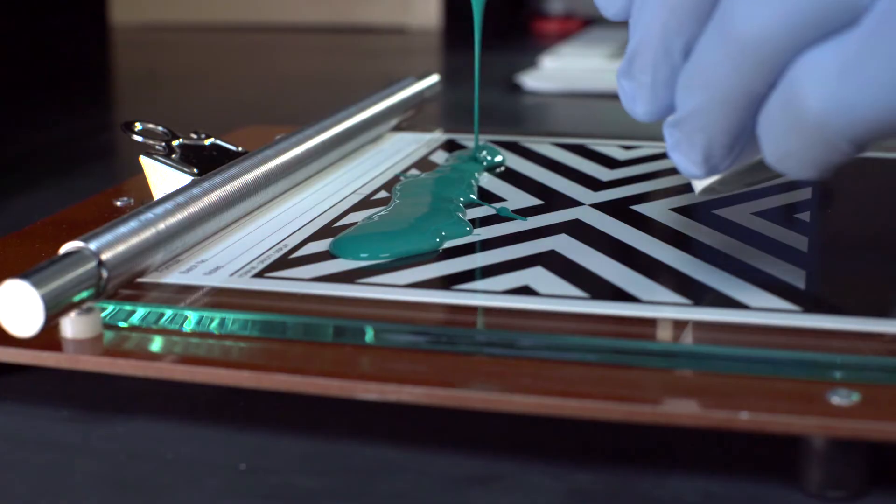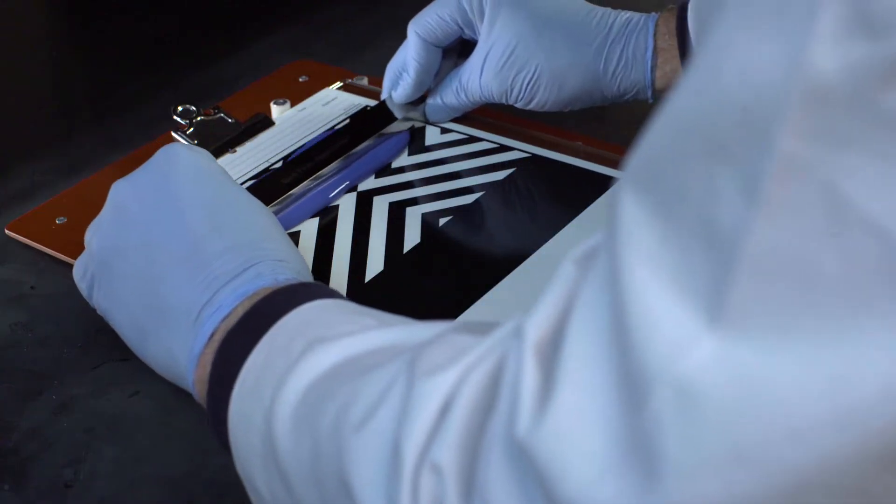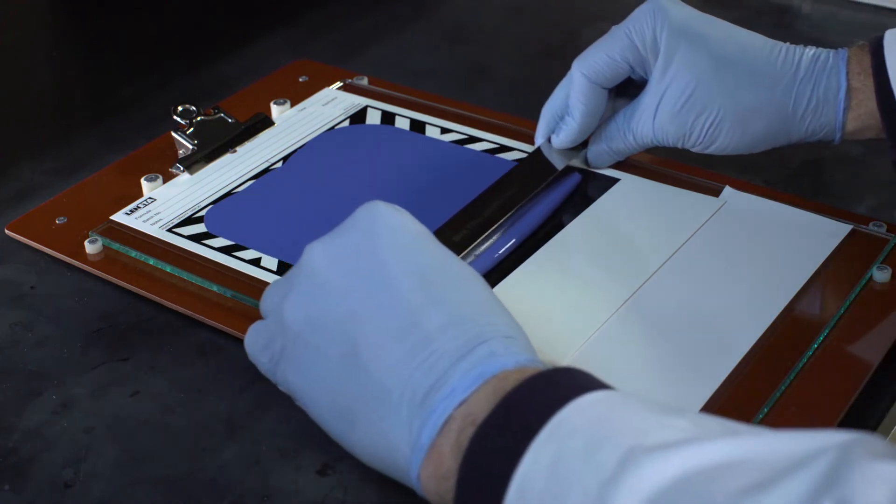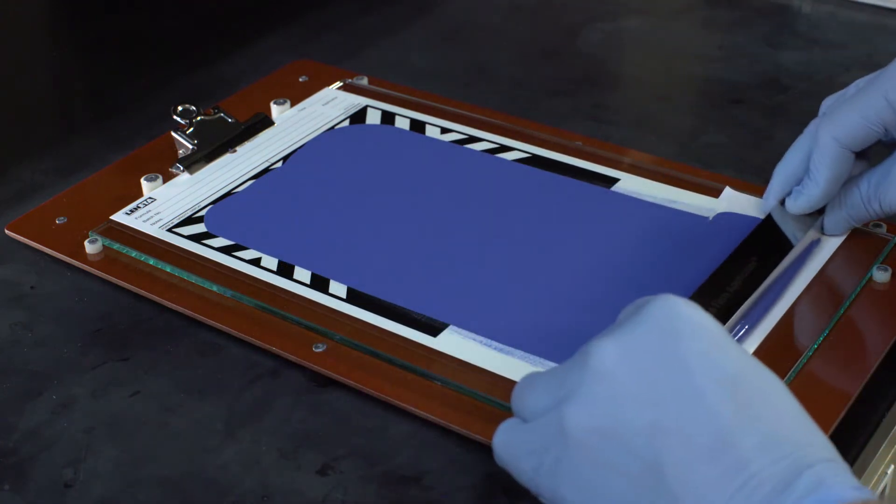Producing a uniform drawdown is often the first step in evaluating paint. Drawdowns are especially useful if you need to evaluate hiding power, true color, or gloss.